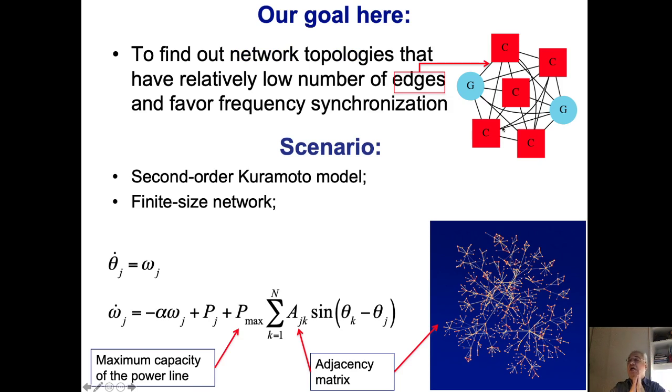Our goal is the following: considering we have a number of loads, generators, and some that are generators one time and loads another time, we want to find the lowest number of edges that favor frequency synchronization. This allows us to build reliable networks that are not expensive, that handle these changes but use a relatively low number of edges. The adjacency matrix takes into consideration the network and the maximum capacity of the power lines.